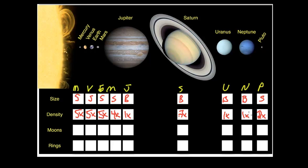So then, moons. If we look at Mercury, Mercury has zero moons, Venus has zero moons, we have one, Mars has two.